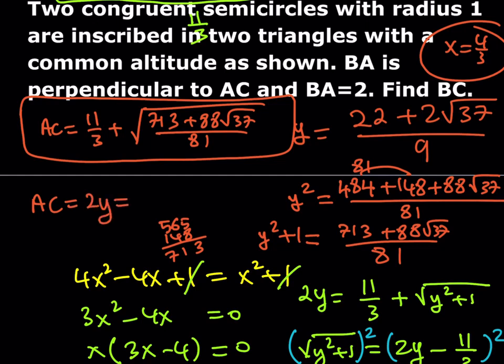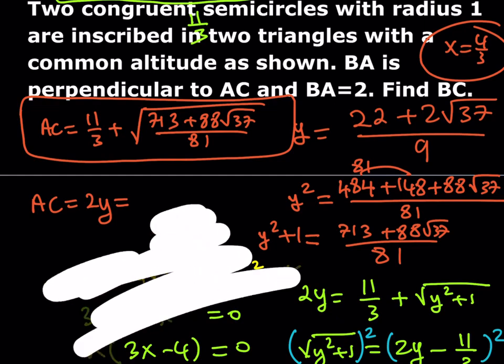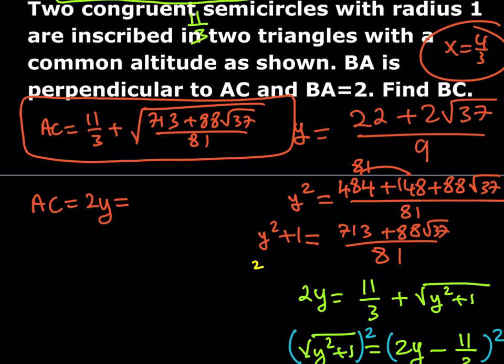This shows similarity is a better approach than the Pythagorean theorem, though you get the same answer either way. So 2y gives AC, and doubling y: 44 plus 4 root 37, all over 9.